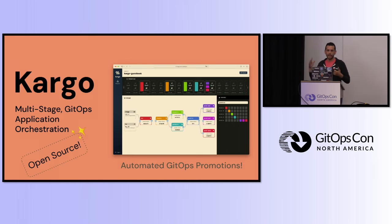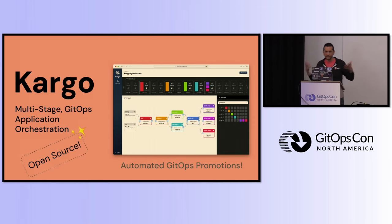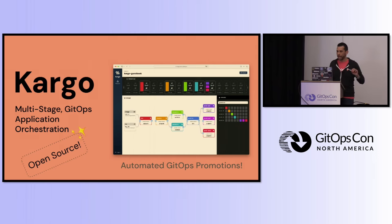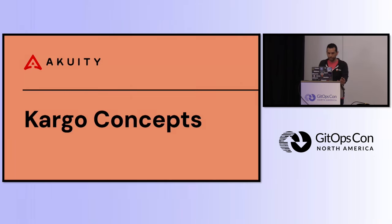Kargo is completely open-source — this is kind of our working model at Acuity. The tagline is multi-stage GitOps application orchestration, but it really is automated GitOps promotions. To talk about Kargo, there's some new terminology that comes into play, and I want to distill those down to what they're actually doing, covering the concepts of Kargo and how it can help with promotions and moving away from using CI to do what CD is supposed to do.